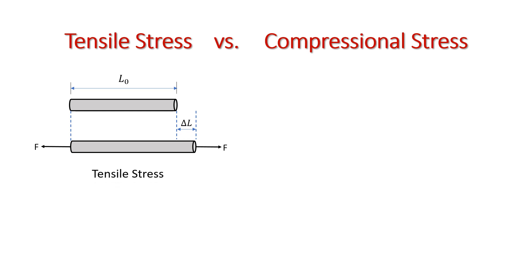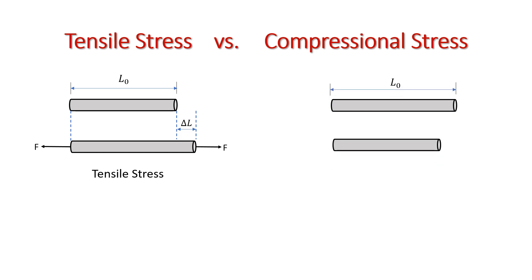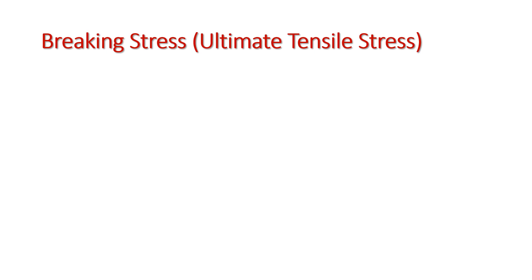On the other hand, for compressional stress, let's say the material has its original length, then it will experience compression, and therefore, as it compresses, the change in length is decreasing. So, the change in length, or delta L, is negative, and that is compressional stress. Here comes now the breaking stress, or sometimes it is also called the ultimate tensile stress. When we say breaking stress, it is the maximum amount of tensile stress that a material can withstand before the material starts to break.